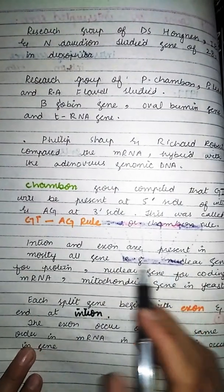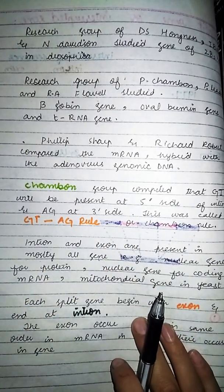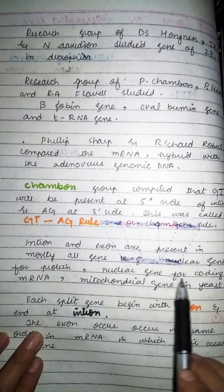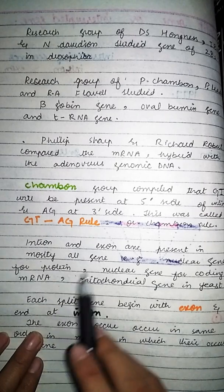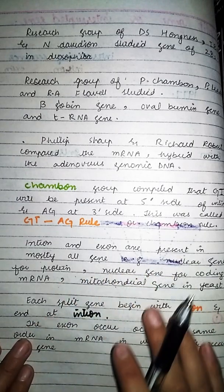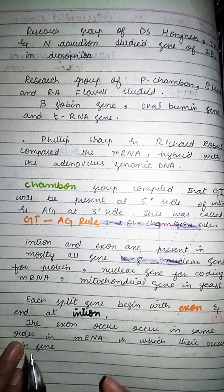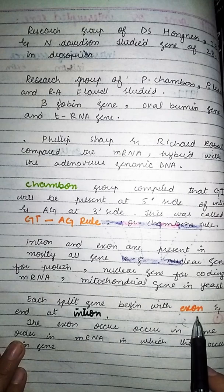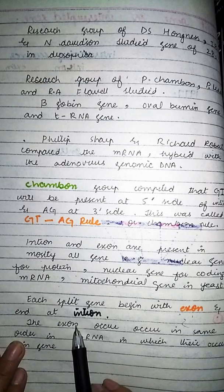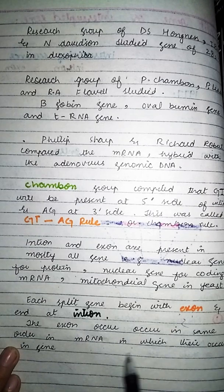Intron اور exon تقریباً تمام genes میں present ہوتے ہیں — for example nuclear gene for protein، nuclear gene for coding messenger RNA، اور mitochondrial gene in yeast۔ ہر split gene exon سے start ہوتی ہے، جو particular protein کو code کرتا ہے، اور intron پر end ہوتی ہے، جو کسی protein کو code نہیں کرتا۔